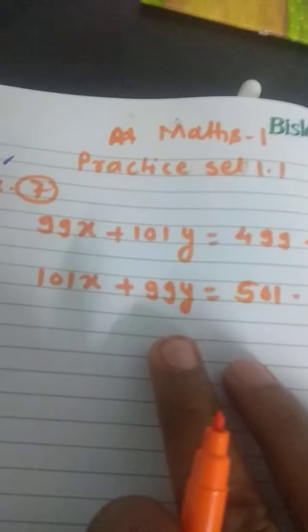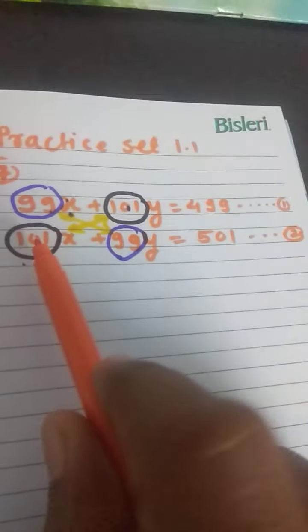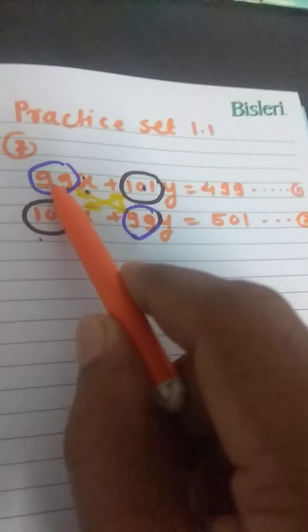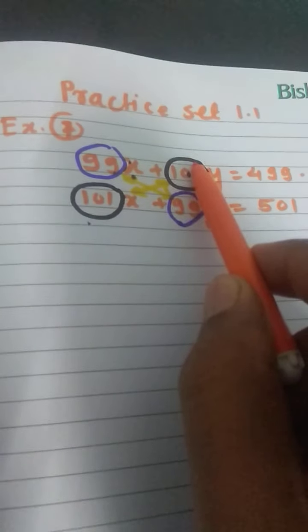Let's see how to solve this type of example. In these two equations, the coefficients of x and y are interchanged: 99 and 101, 101 and 99.